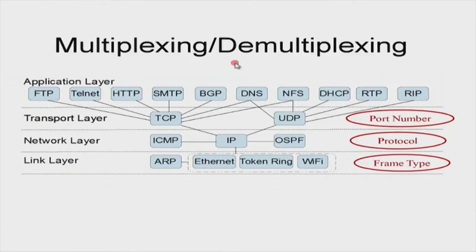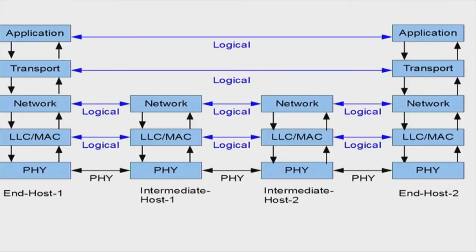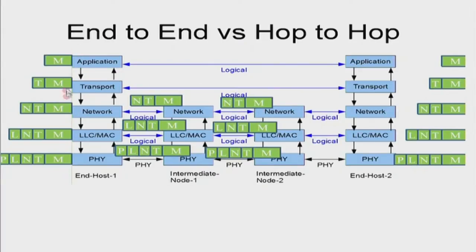The concept of multiplexing and demultiplexing: there are two things happening here. One is encapsulation as we have seen. As part of the lab, we will look at all these different headers to see that whatever message you are sending is indeed being encapsulated in this fashion. You will look at transport layer headers, network layer headers, link layer headers, and you will also see who your next hop is — all that information you are going to see as part of the lab.